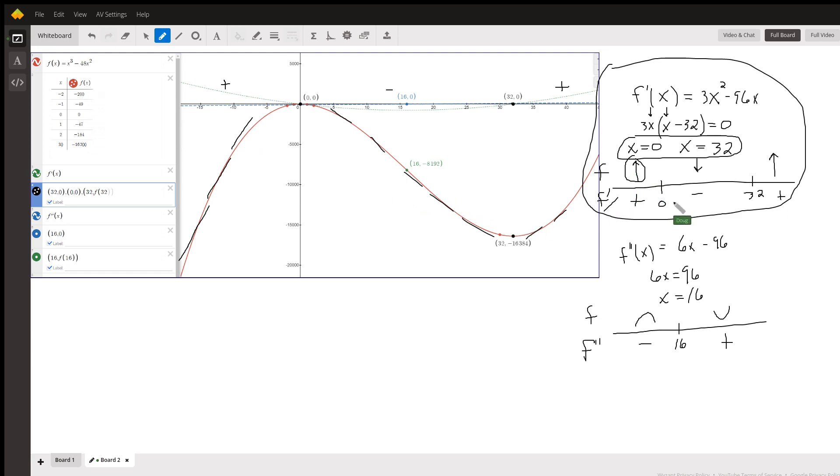And similarly, between 0 and 32, pick any number you want: 1, 16, 27. Usually you pick something that's pretty easy to work with, like 1. If you put 1 in for x, you get positive times negative is negative. Tangent lines going downhill. The original function is decreasing.